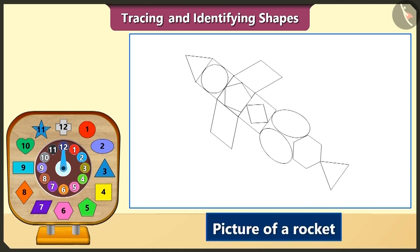If we want to show this rocket flying in the sky, then which shape would we have to trace from these? Hmm, to show the rocket flying in the sky, we would have to trace the star-shaped block.